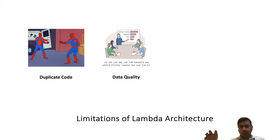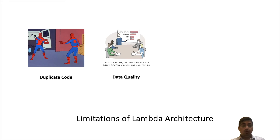The next issue is data quality. Whenever you have duplicate code, even with a very stringent process to maintain consistency between these codebases, there will be chances of corrupting your data. Since multiple developers work in your team, they may use different abbreviations or different ways to write the same logic, which creates a lot of data quality issues.